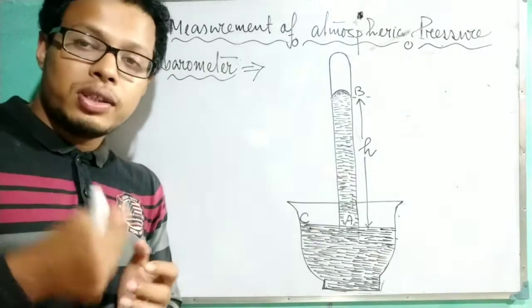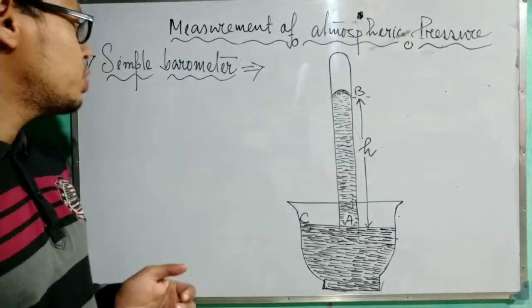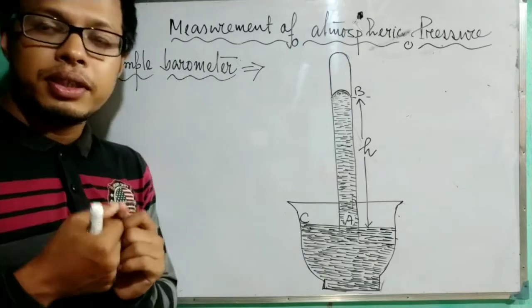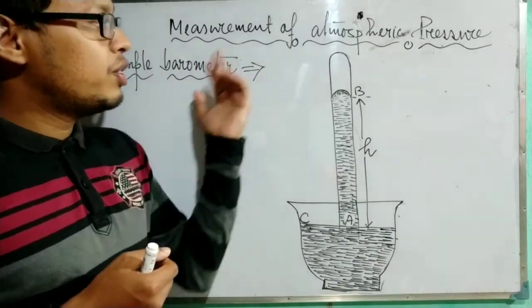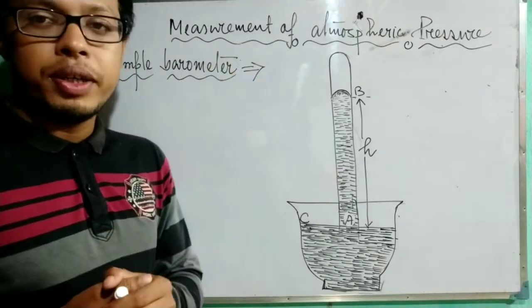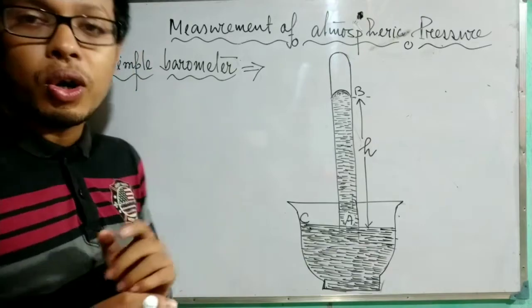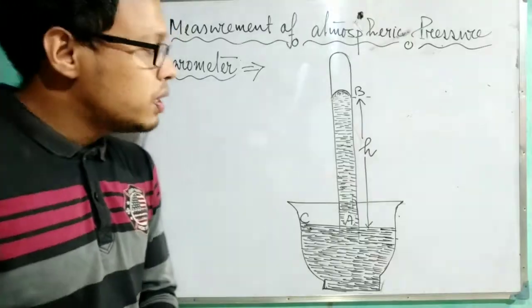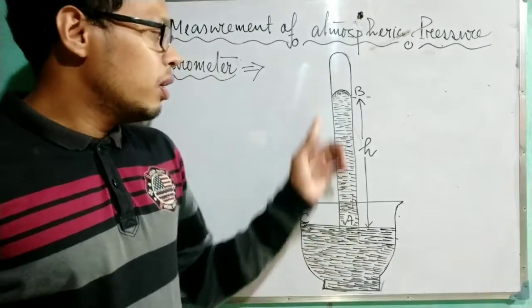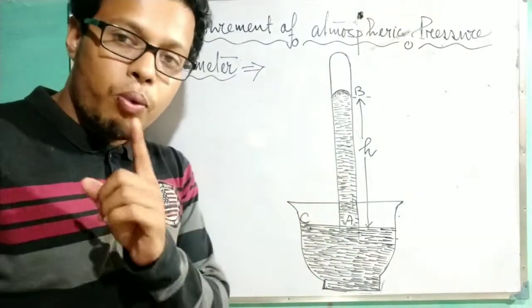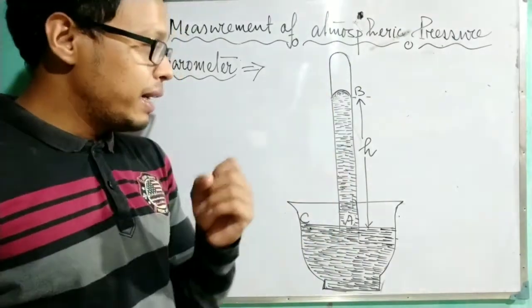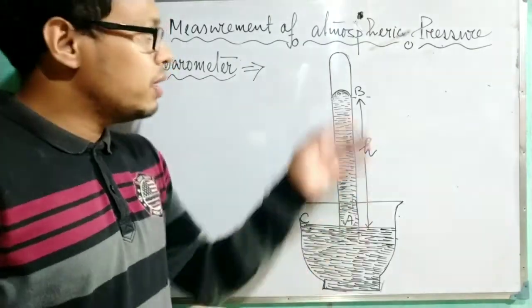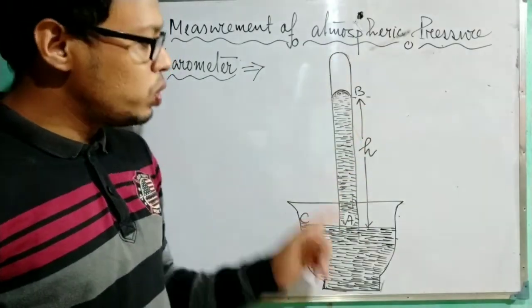Let's start with the simple barometer, which is also called the Torricelli barometer, because Torricelli was a famous scientist who invented this type of barometer. The simple barometer uses a glass tube of 1 meter or 100 centimeters long, which is closed at one end and open at the other end. A trough is also needed, which is filled with mercury.